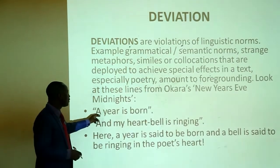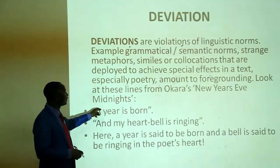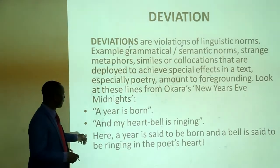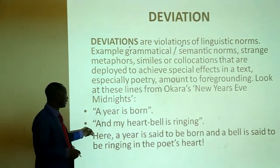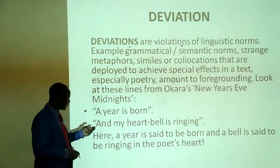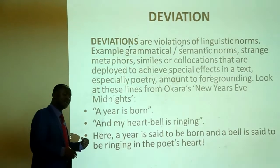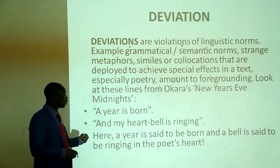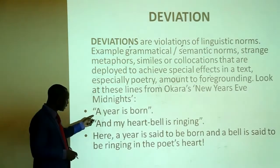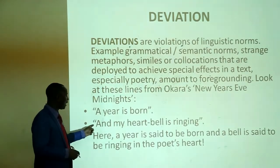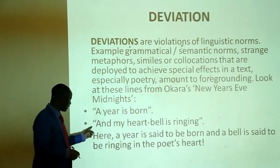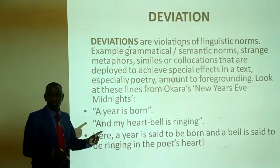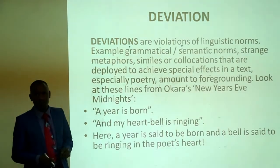Is it possible for a year to be born? No, not possible. And can your heart possess a bell that rings? That is also impossible. Syntactically, the sentences are grammatically okay, but semantically there is a form of deviation for artistic purposes.